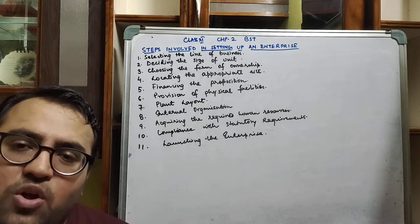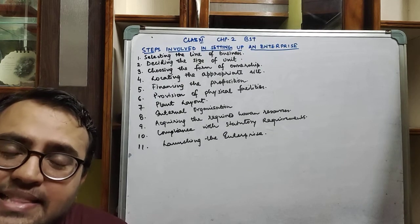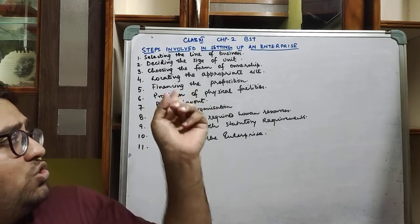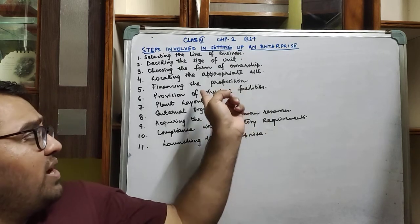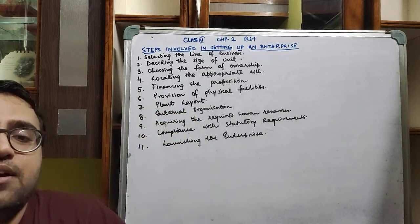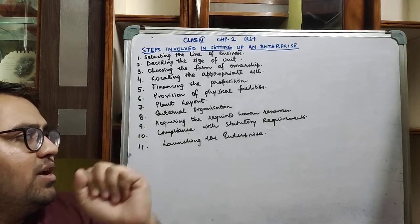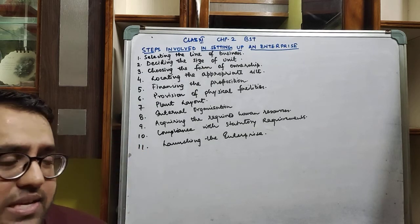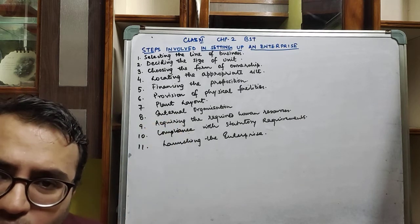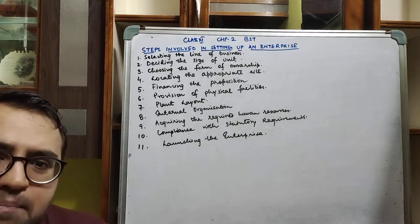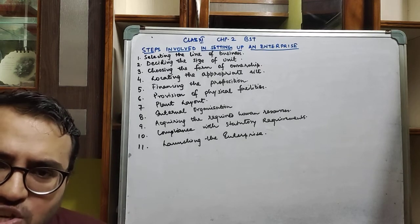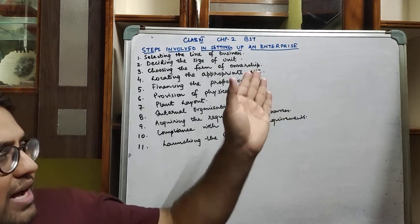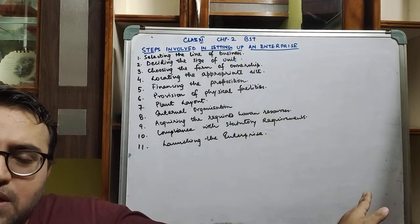The steps involved in setting up or establishing an enterprise are: first, selecting the line of business; second, deciding the size of the business or unit; third, choosing the form of ownership; fourth, locating the appropriate site; fifth, financing the proposition; sixth, provision of physical facilities; seventh, plant layout; eighth, internal organization; ninth, acquiring the right and required human resources; and tenth, compliance with statutory requirements; while the eleventh and last step is launching the enterprise.